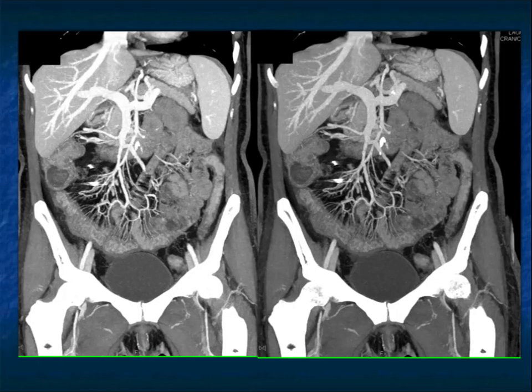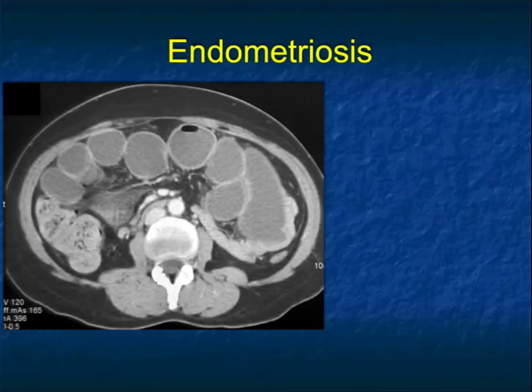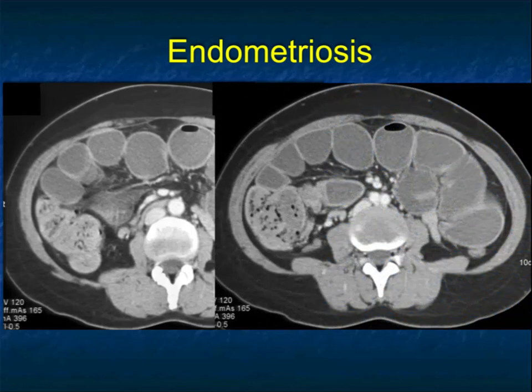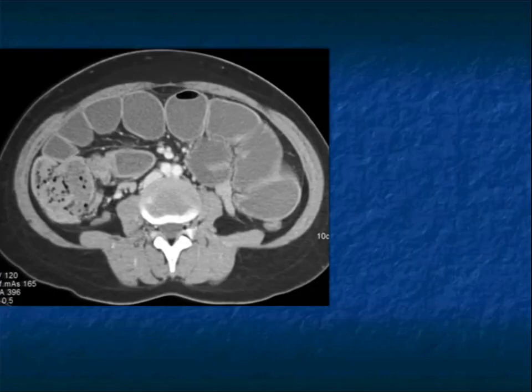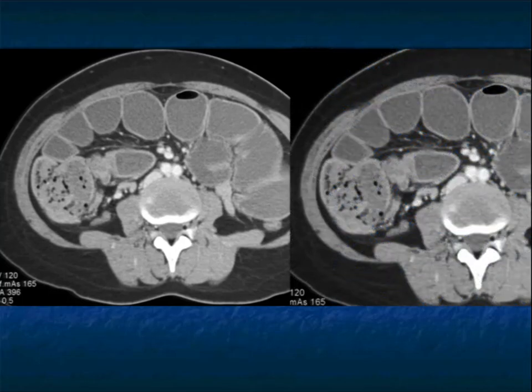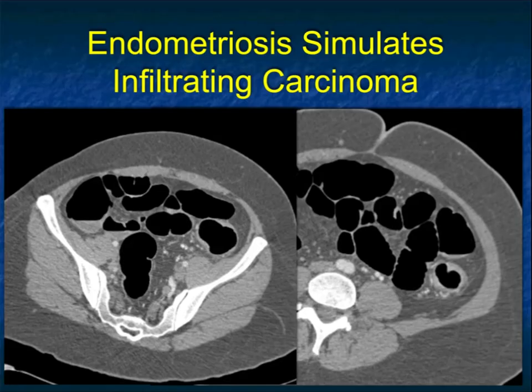Here's another patient with bowel obstruction. It looks like a mass by the terminal ileum — you'd say lymphoma, maybe carcinoma, or even a cecal cancer growing into the terminal ileum. This was an example of implants on the terminal ileum from endometriosis, causing what looked like a tumor. It was causing bowel obstruction, but this was endometriosis.